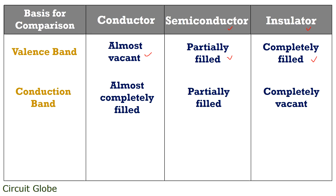Coming to the conduction band: conductors have a completely filled conduction band because charged carriers move quickly from the valence band as no band gap exists. Semiconductors have a partially filled conduction band, as charge carriers move toward it on application of external potential. Insulators support negligible flow of electric current, therefore their conduction band is completely vacant.